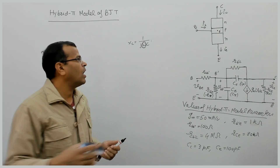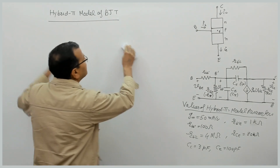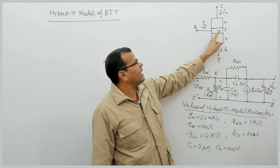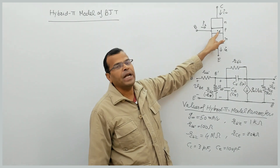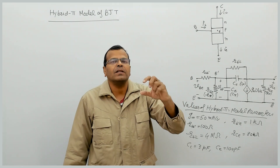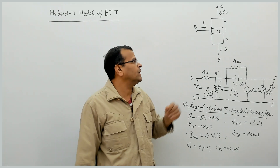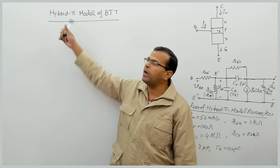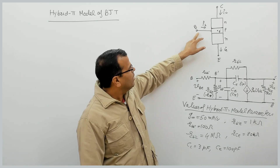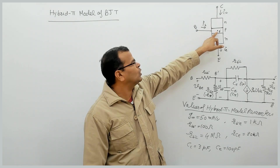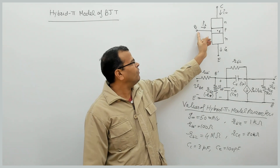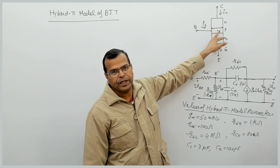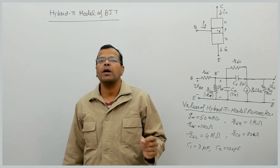We will be talking about the high frequency model of BJT, which is nothing but the hybrid pi model. Here we have one internal terminal of base — that is B', which is not accessible but just an imaginary point inside the BJT. This is the model of BJT for high frequencies, which is nothing but the hybrid pi model.